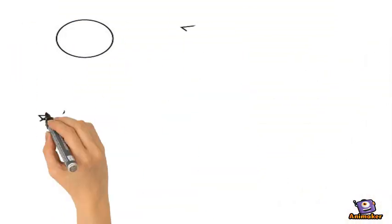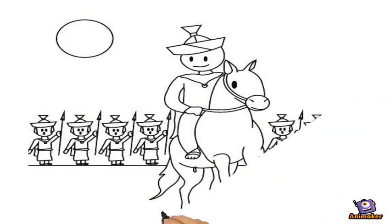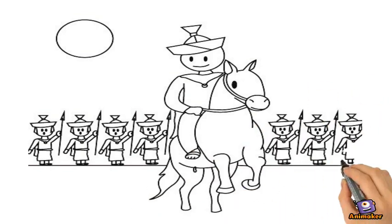Some years later, an imperial edict ordered the sons of veterans to join the army, and Martin had to obey. At the age of 15, he became a cavalry officer.